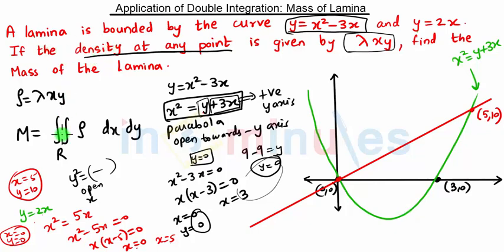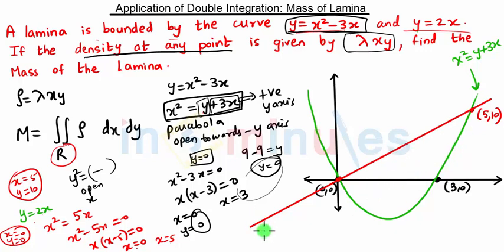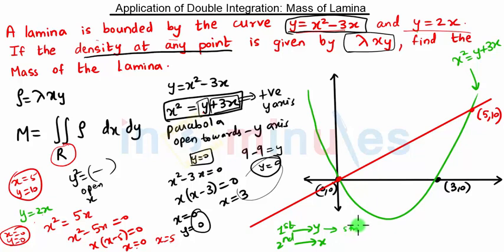We have to find the mass of the lamina over the region R, bounded between these two curves. This is the region R, and we have to perform the integration over this region. We will first integrate with respect to y and second with respect to x. Since we are first integrating with respect to y, we will consider a strip parallel to the y-axis.